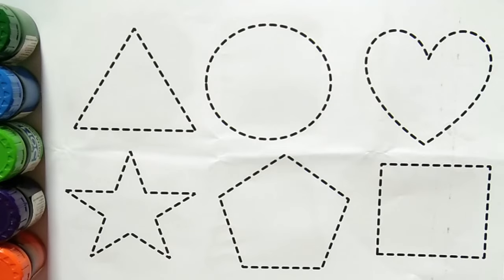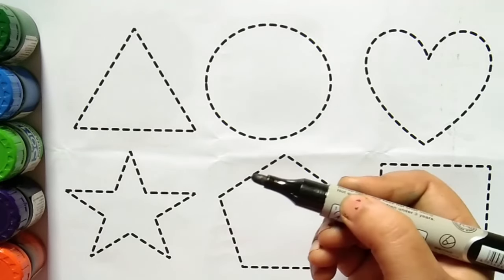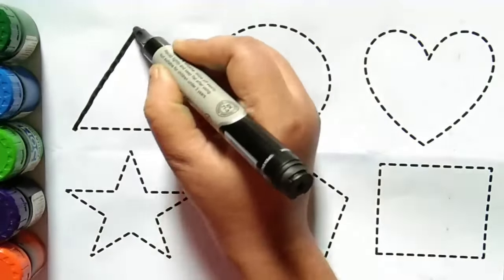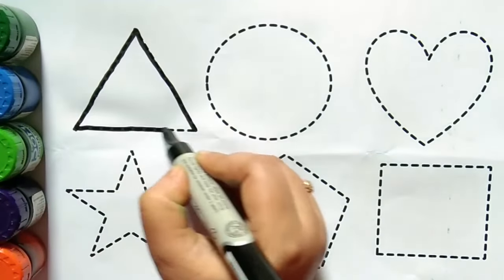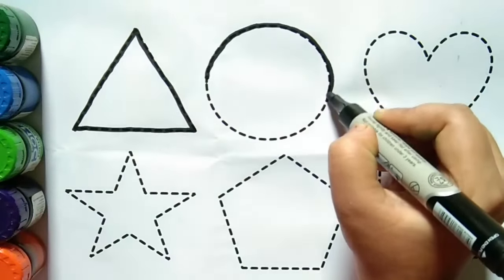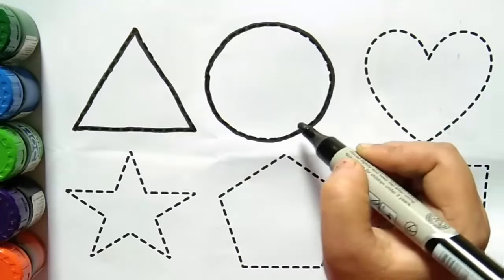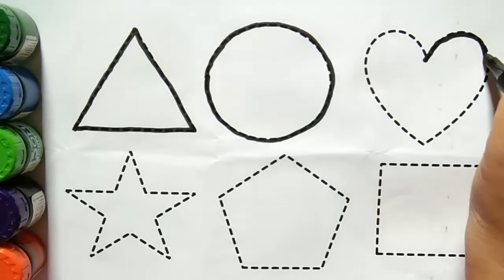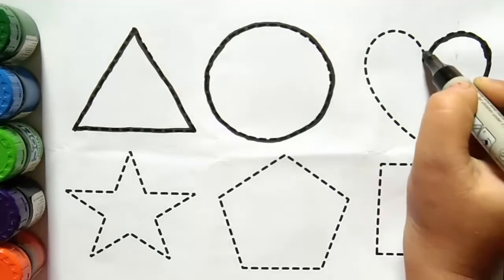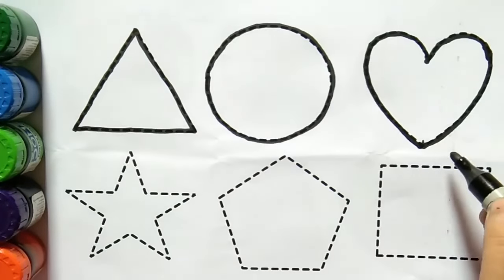Let's draw some shapes with colors. Black color: triangle, circle, heart.